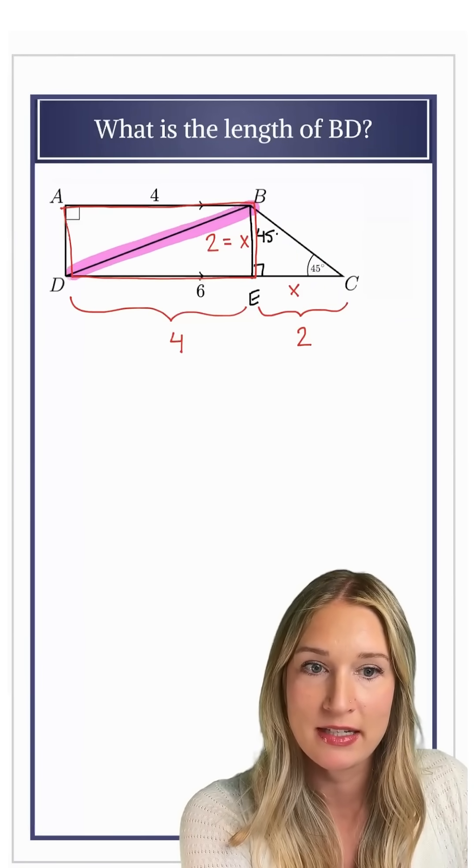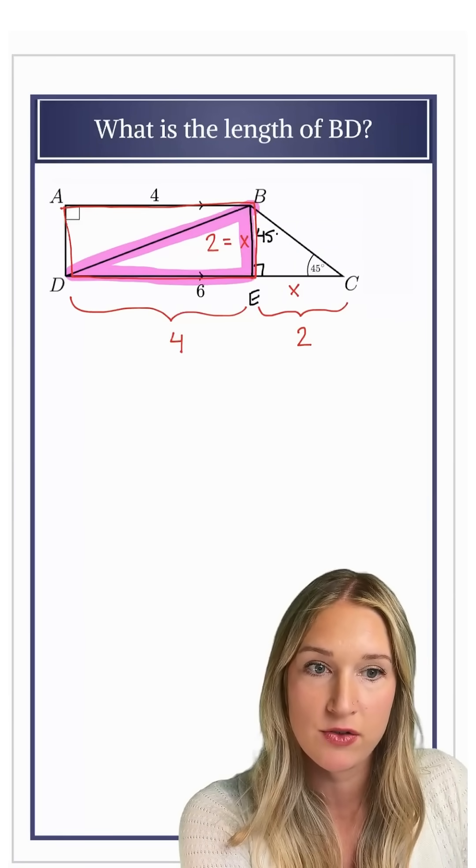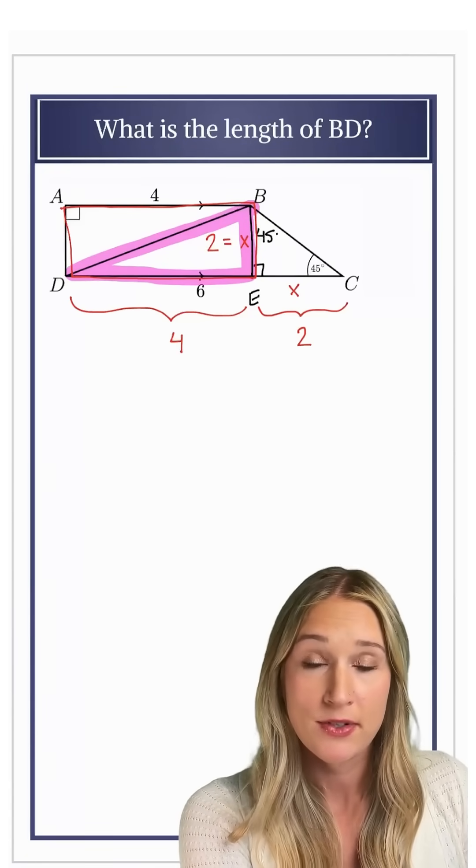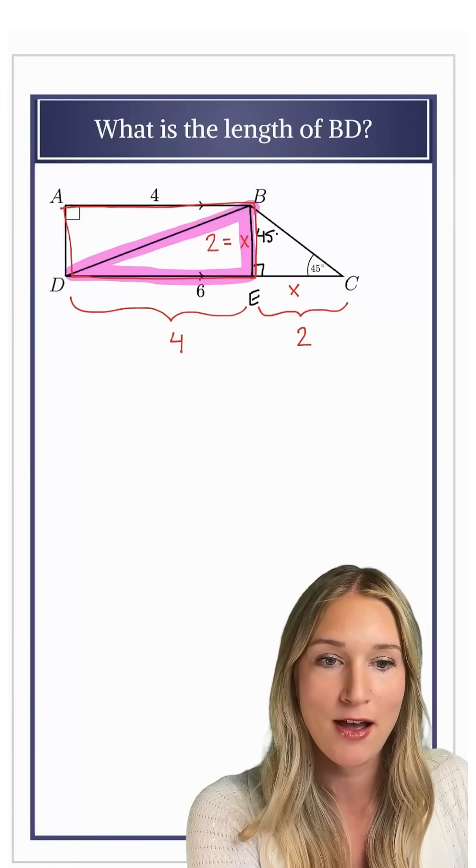If I'm just trying to find the diagonal BD, I've now created a right triangle where I know the base and the height. So let me use the Pythagorean theorem to solve for my hypotenuse.